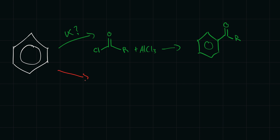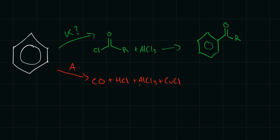Now what if we wanted an aldehyde — say the R group we wanted would be a hydrogen? We can't just use an acyl chloride with only a hydrogen; that is extremely unstable and not stable enough to use. So we have to use a different method. We use carbon monoxide, hydrochloric acid under high pressure, then aluminum chloride and copper chloride. The CO and HCl create that specific unstable molecule, and the AlCl3 and CuCl catalyze the reaction. This creates benzaldehyde — the benzene ring with a hydrogen instead of an R group. This is called the Gattermann-Koch synthesis, one way of creating an aldehyde on a benzene ring.